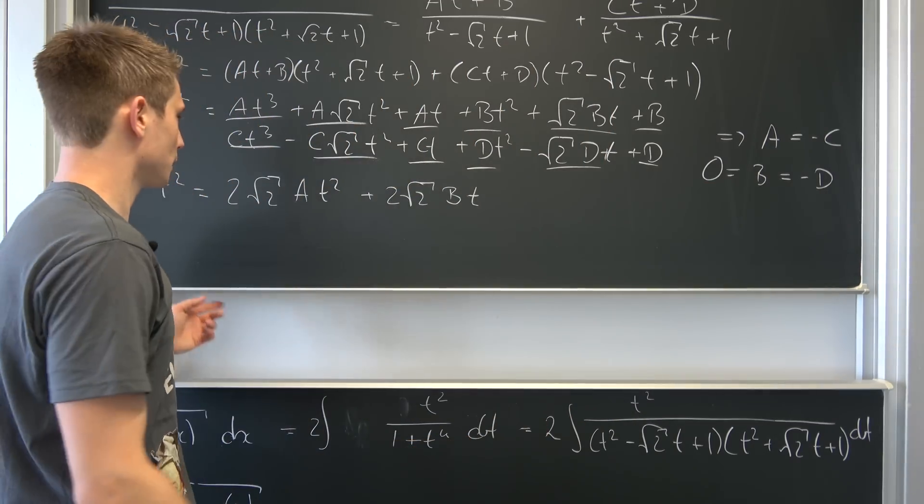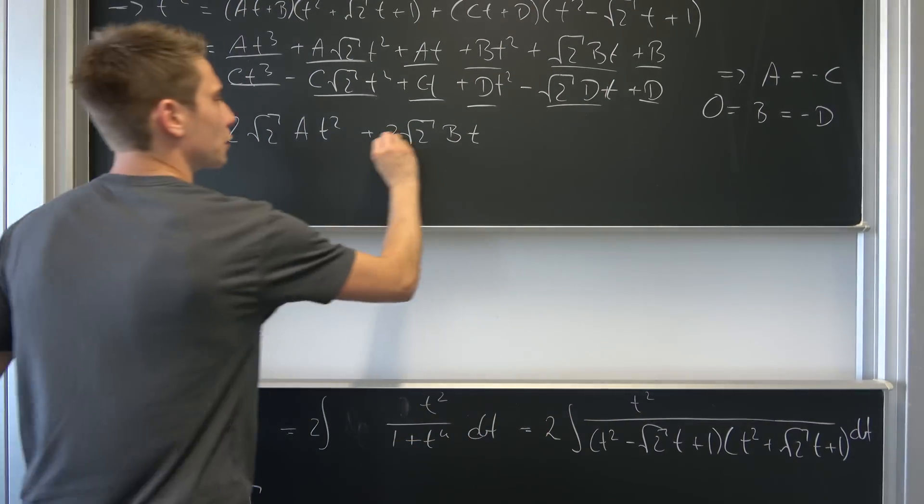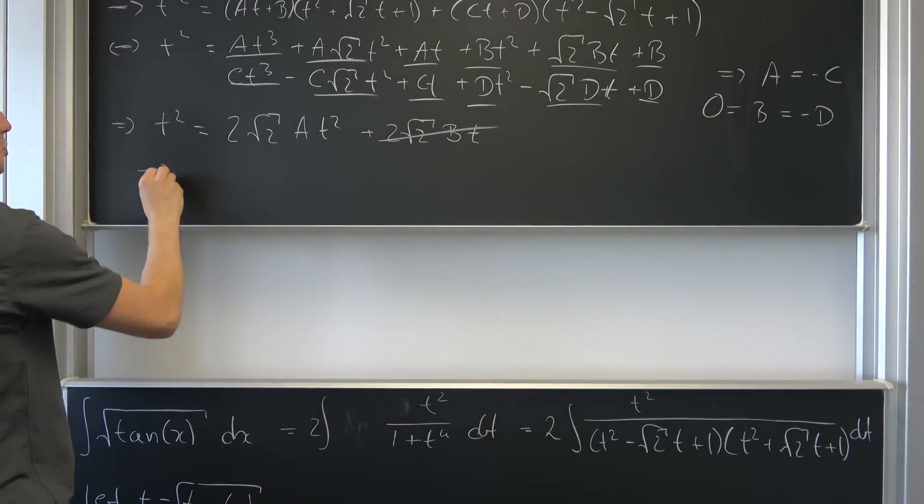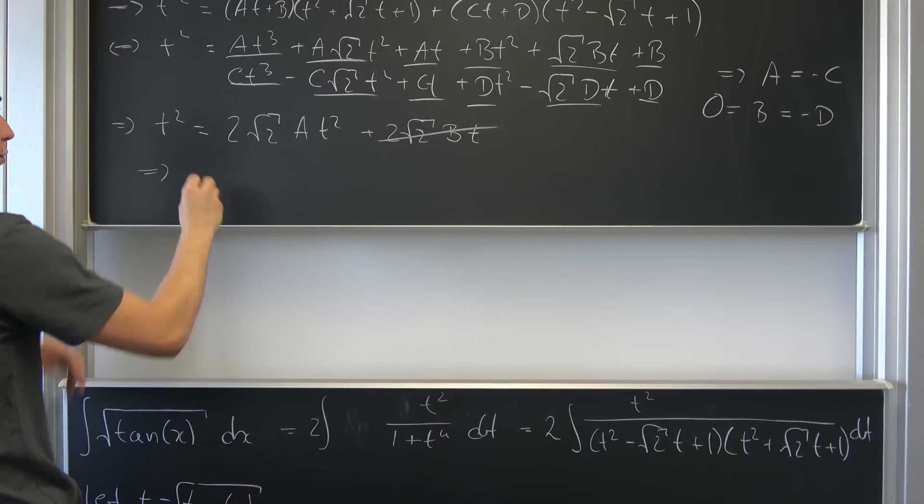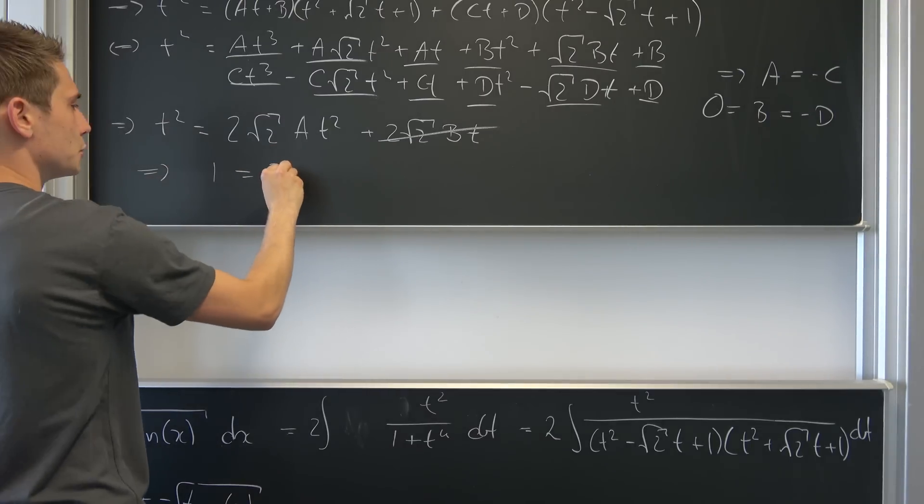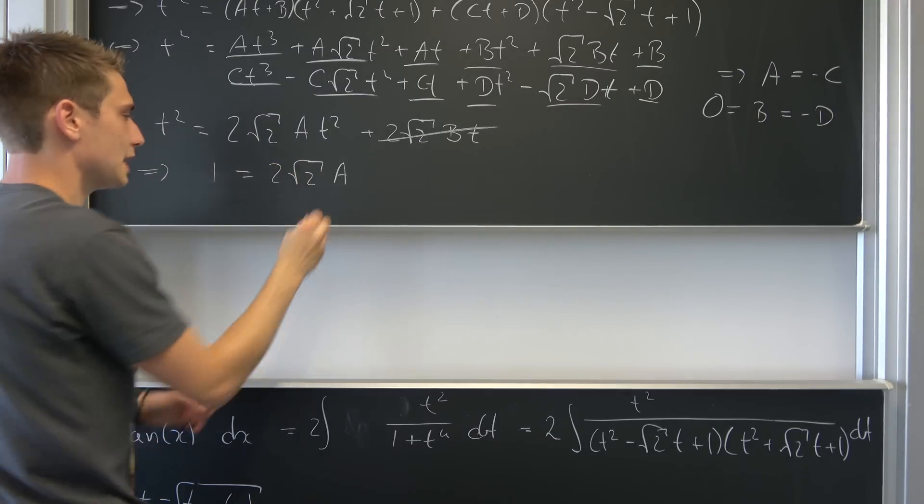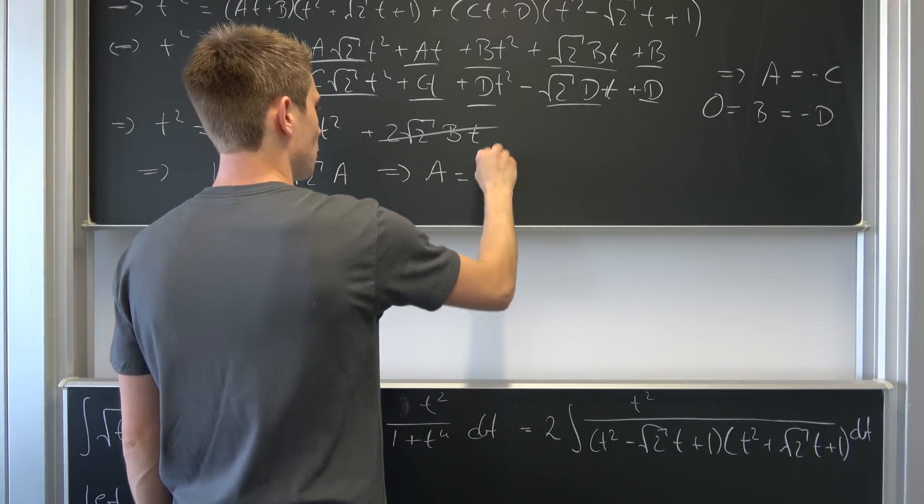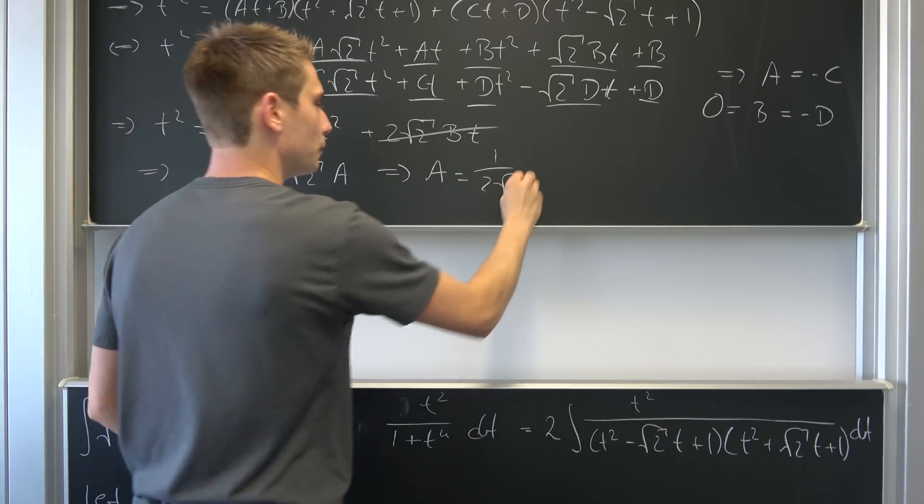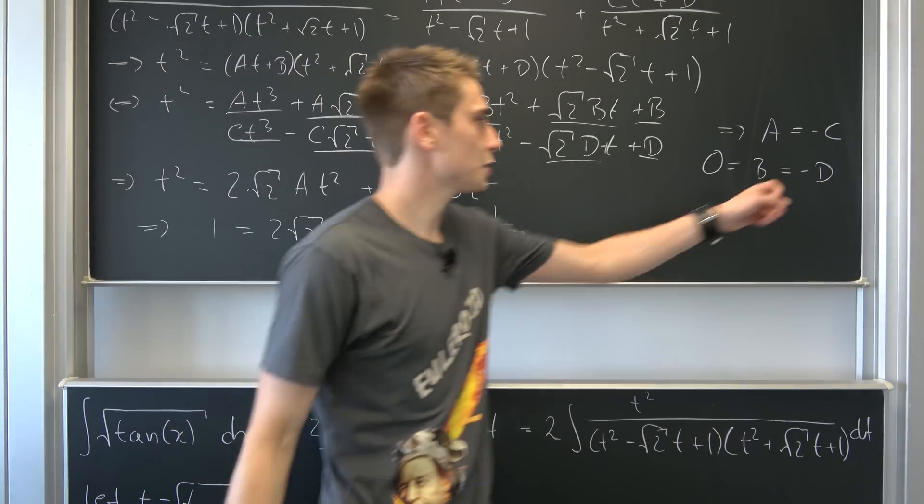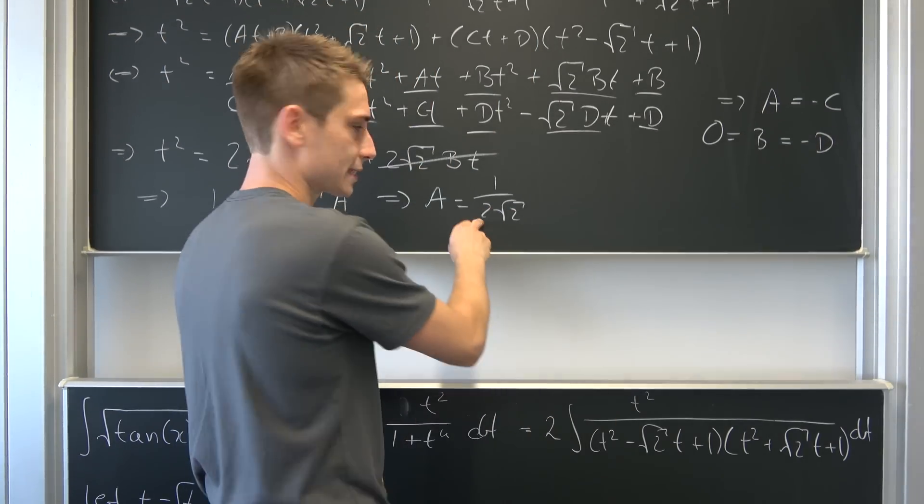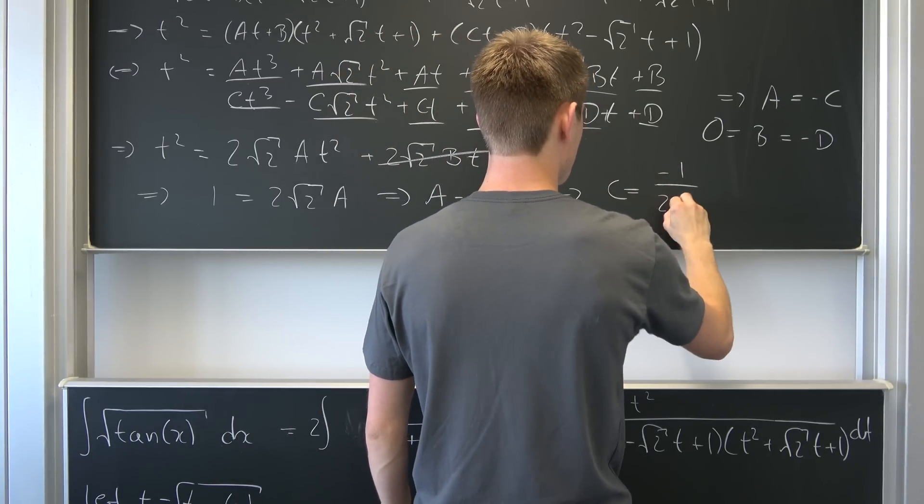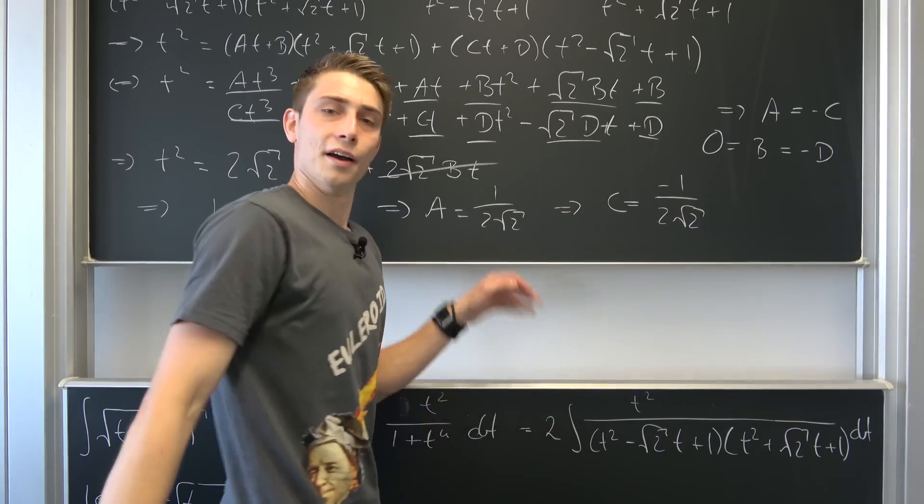Which also means that d is equal to zero. So we got rid of this. So all that's really left to say we got rid of this is that those two are equal. That also means if we just compare coefficients we know that 1 must be equal to 2 times square root of 2 times a. And since this factor isn't equal to zero that means that a is nothing but 1 over 2 times square root of 2. And we have another condition. We know that c is exactly negative a. That also means that c is nothing but negative 1 over 2 times square root of 2. And then we are done.